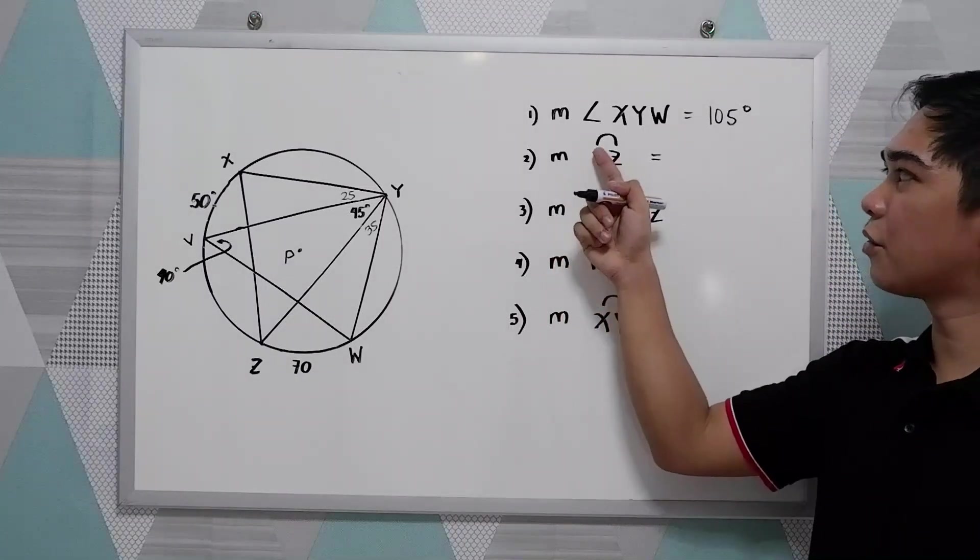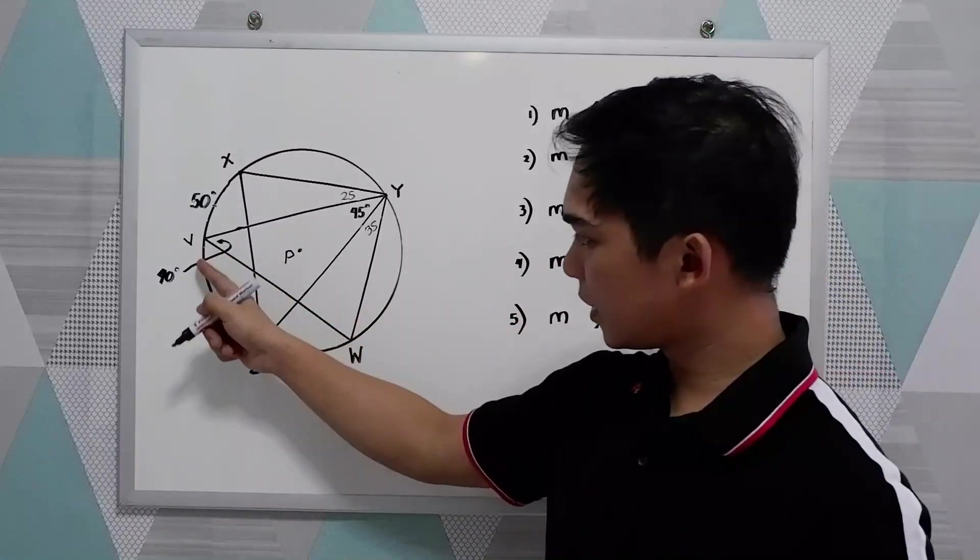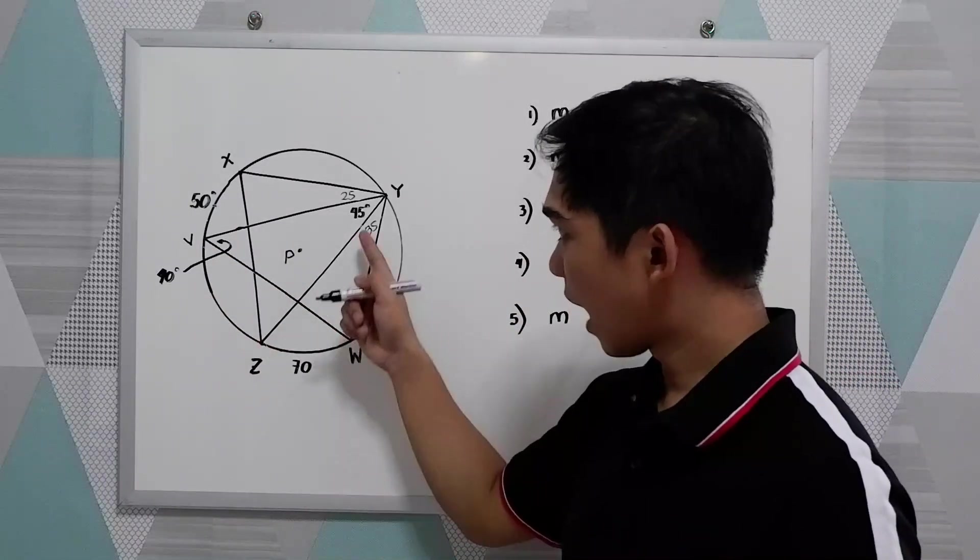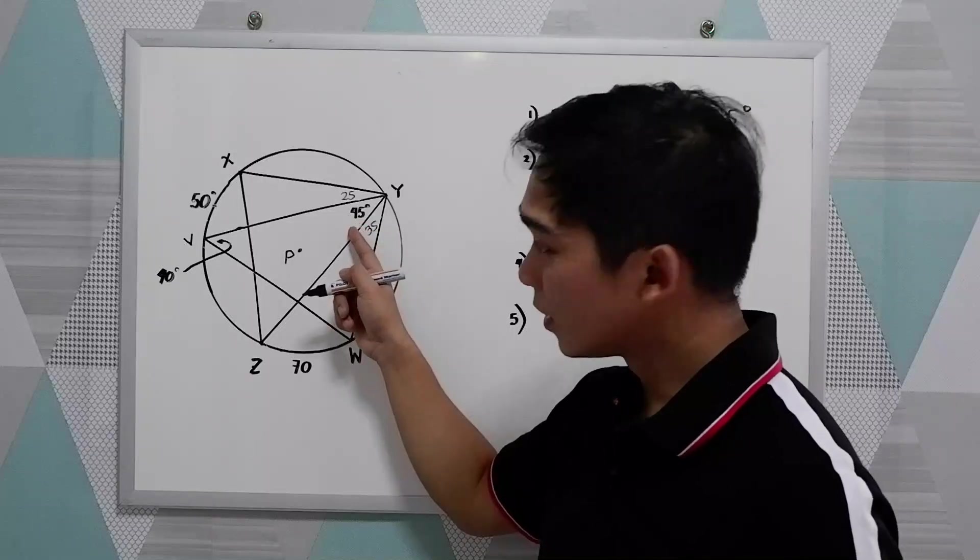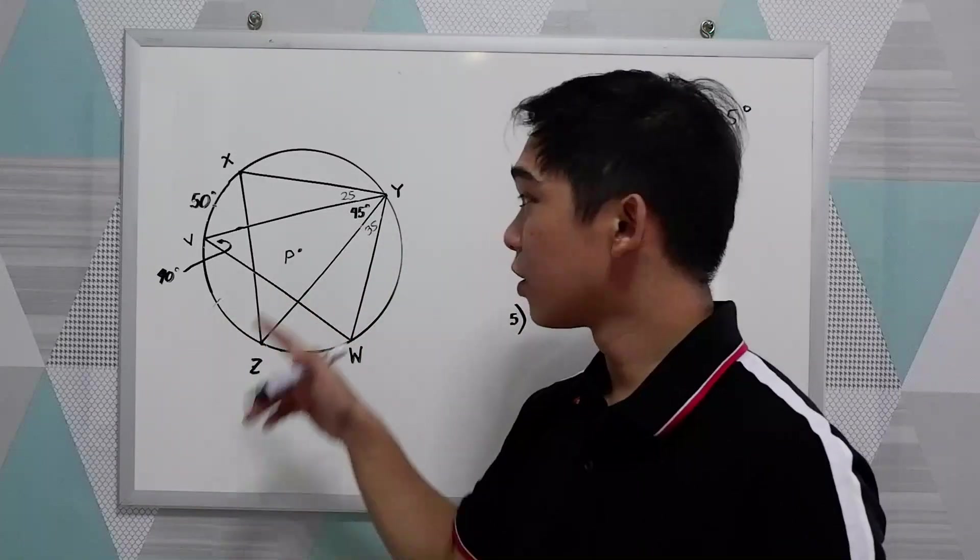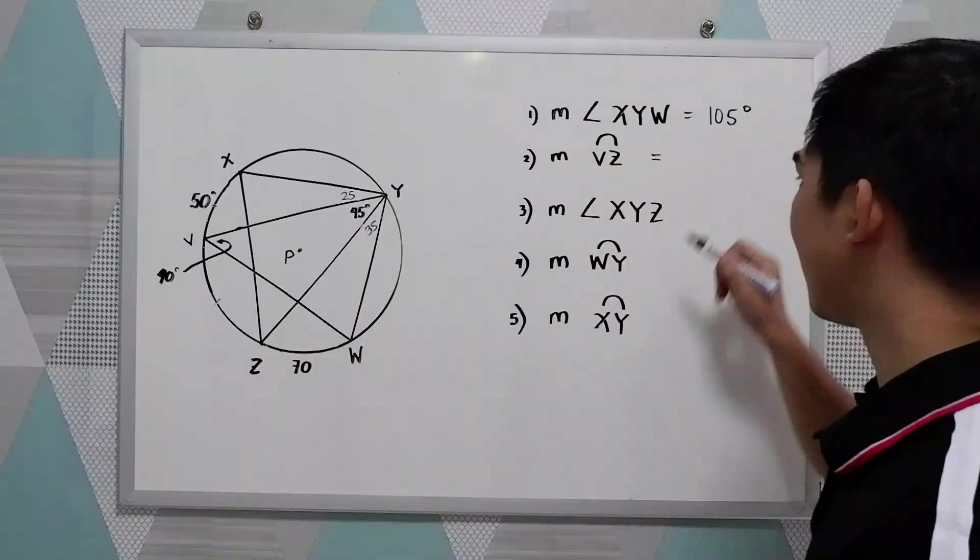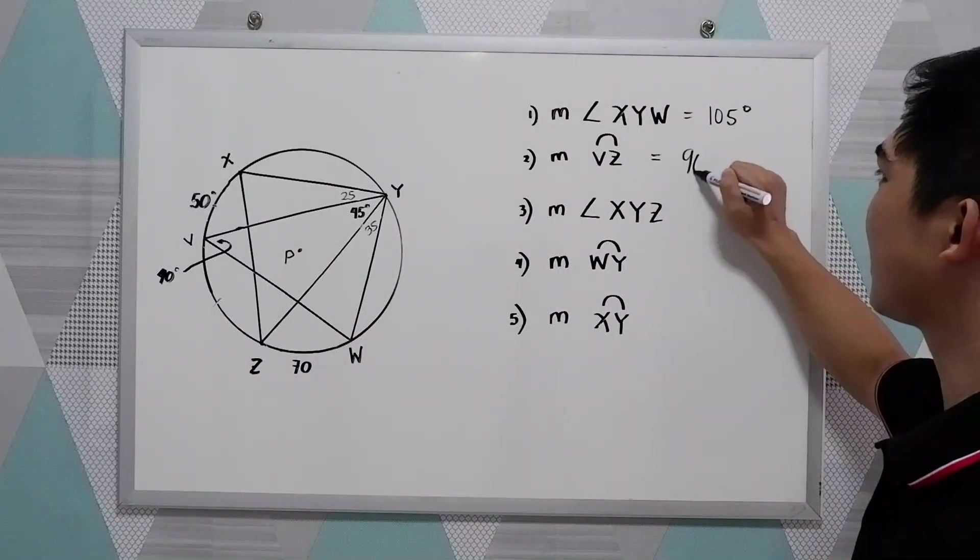Next, measure of arc V-Z. Our given is 45, the inscribed angle. To find the intercepted arc, times 2. So, 45 times 2, this is 90. 90 degrees.